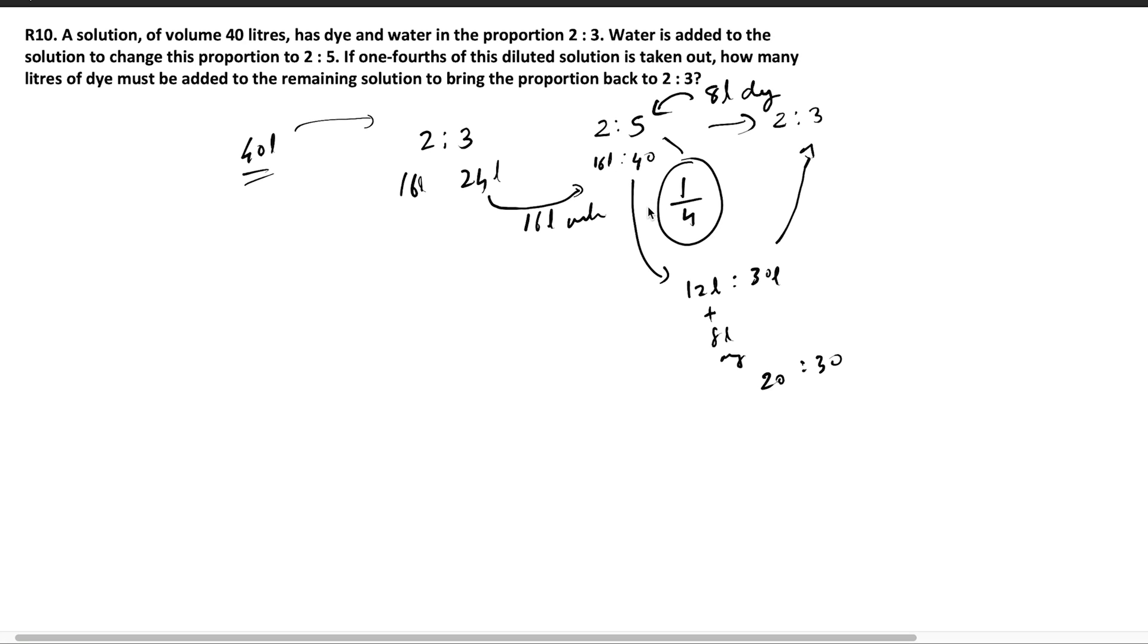The next step was to take out 1 by 4th of the solution. When you take 1 by 4th of a solution, you are taking out both the components of the solution. That means you are left with 12 liters and 30 liters of dye and water respectively. And the final part of the question was to make the proportion back to 2 is to 3. So all I did was add 8 liters of dye which will make total amount of dye in the solution as 20 and water will remain the same as 30. So I will get the ratio as 2 is to 3 and the answer here is 8.